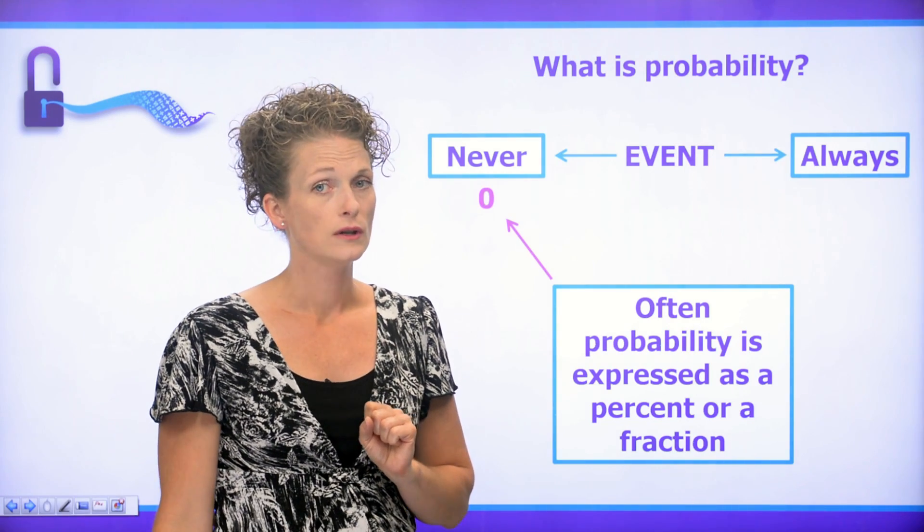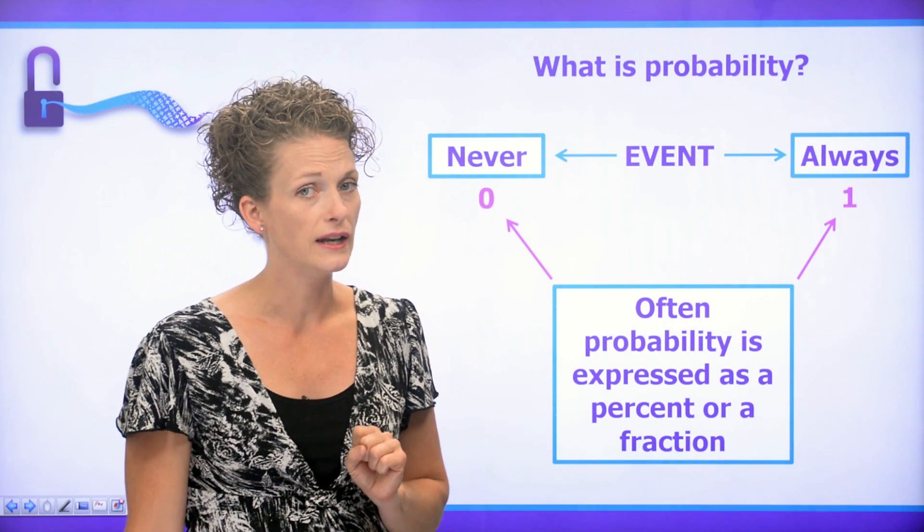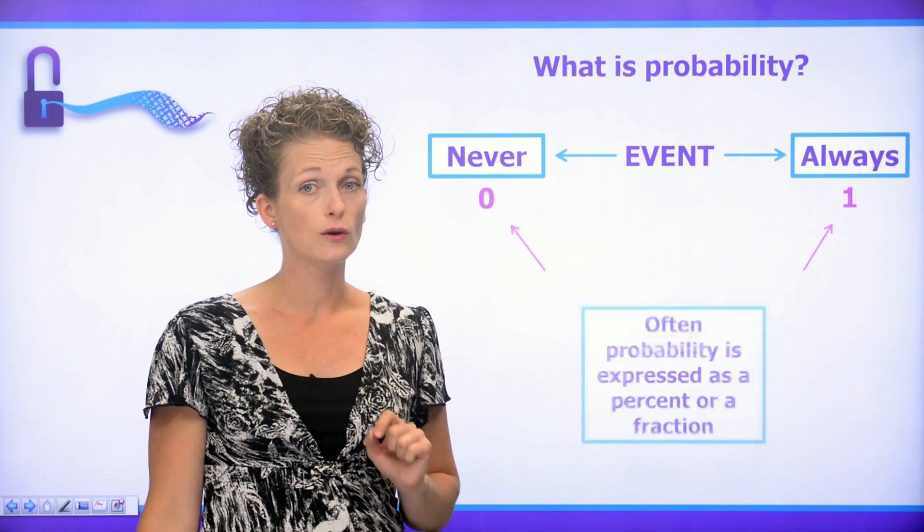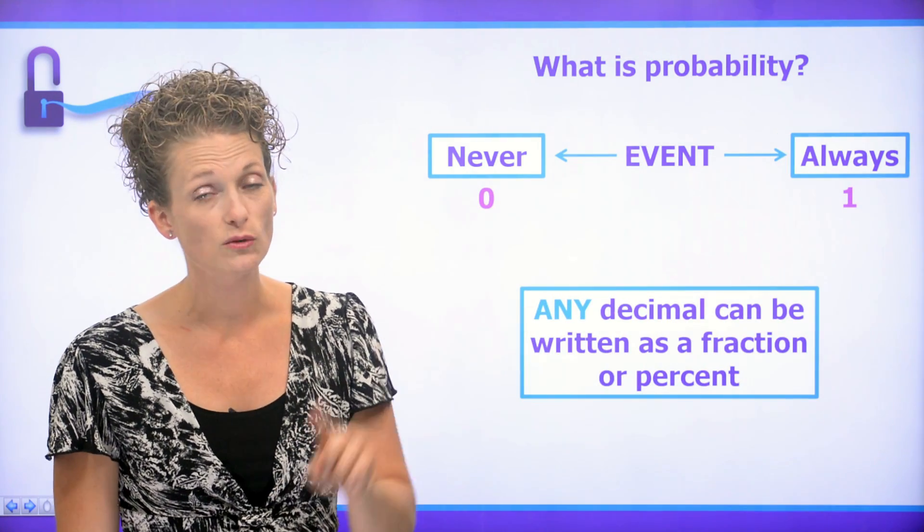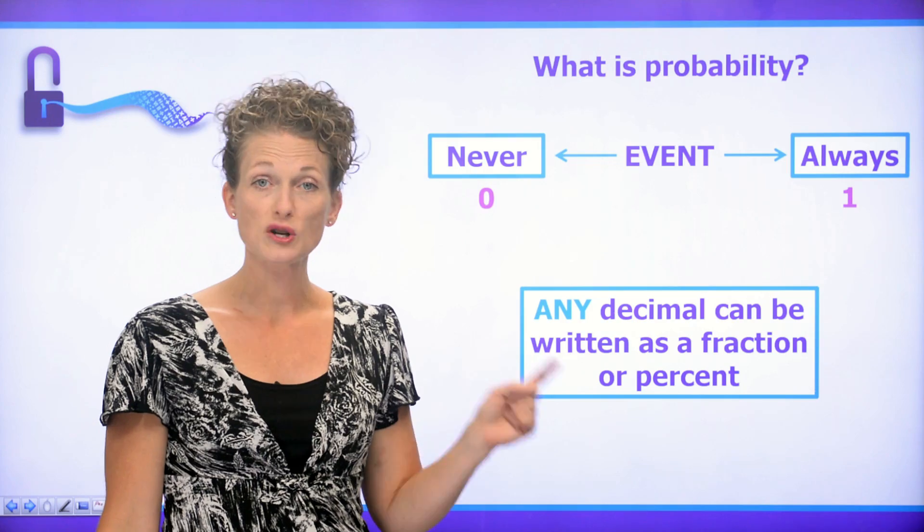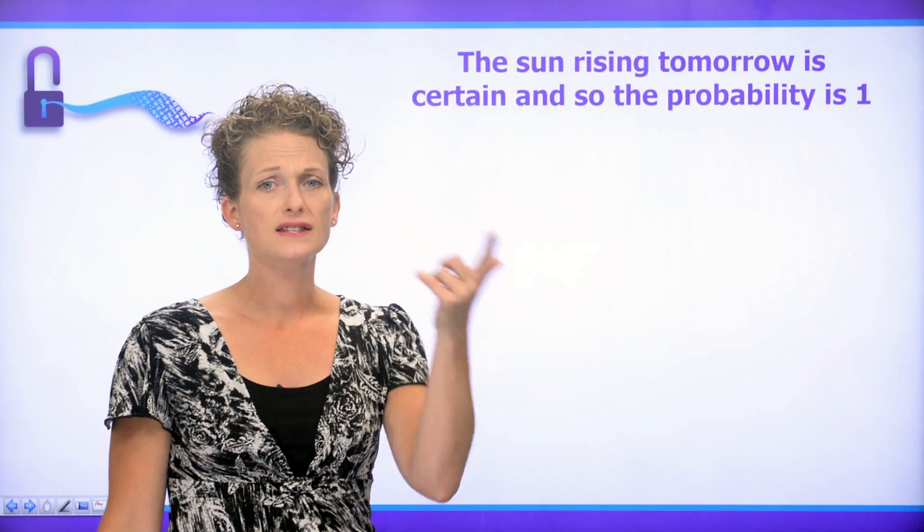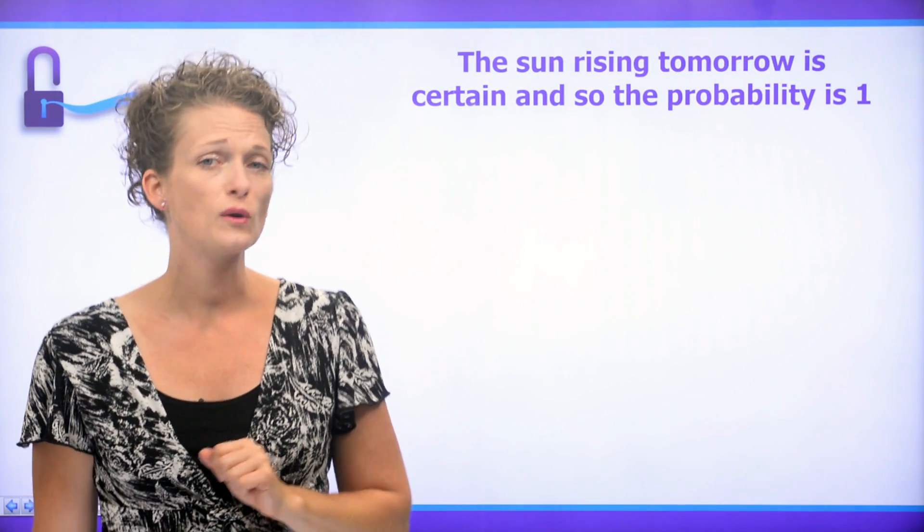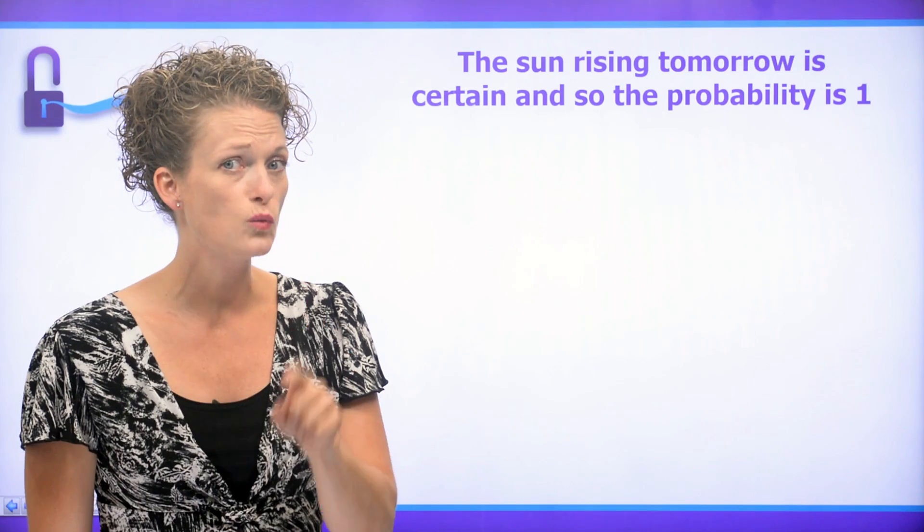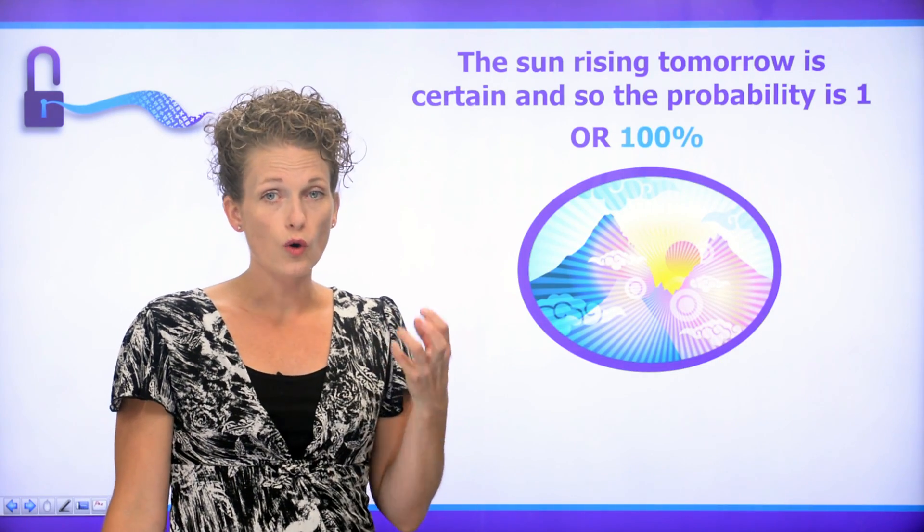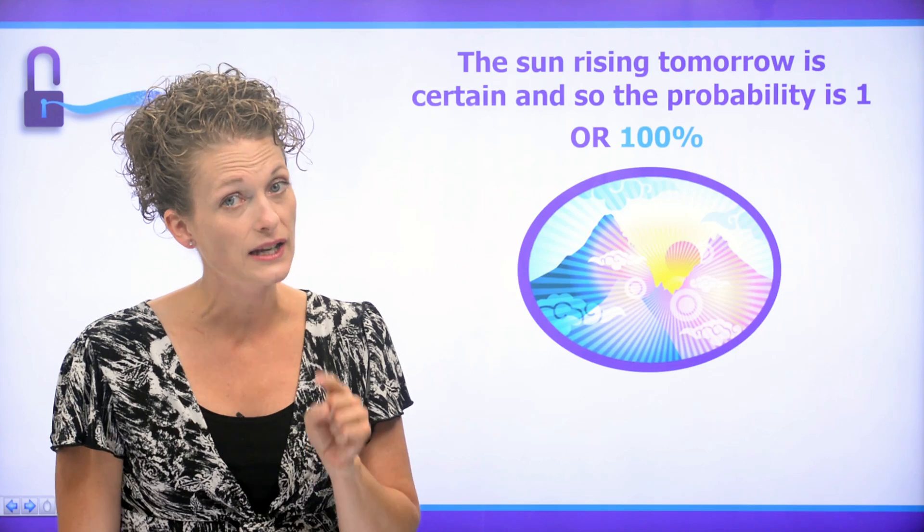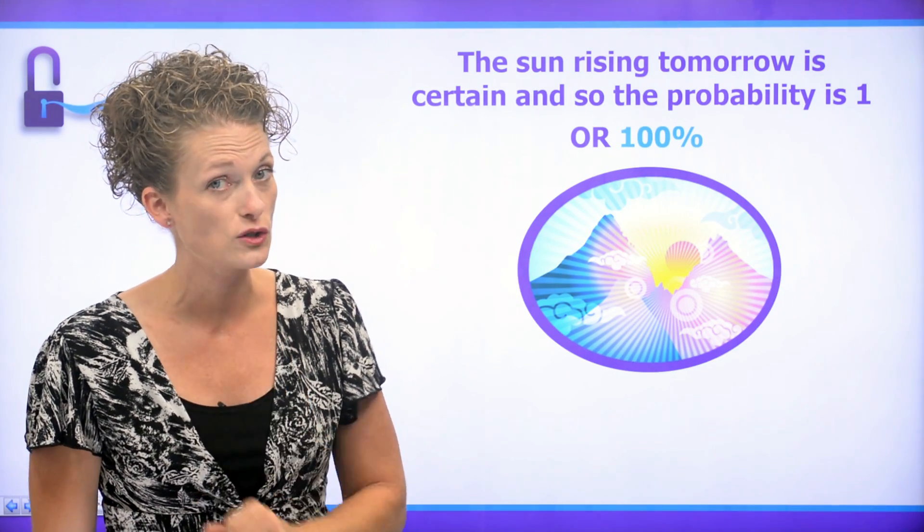Never is 0, and always is 1. Now remember, between 0 and 1 is a decimal, and decimals, any decimal, can be written as a fraction or percent. So the fact that the sun is going to rise tomorrow is a certain probability, which is 1. Or we could say 100%. We know 100% that the sun is definitely going to rise.